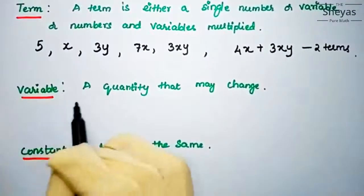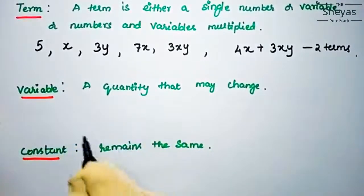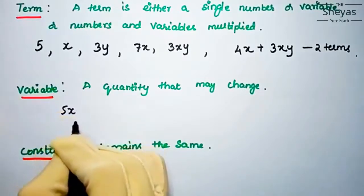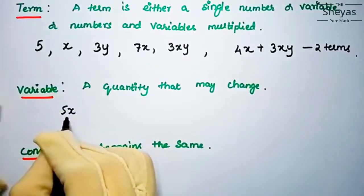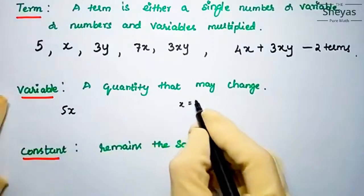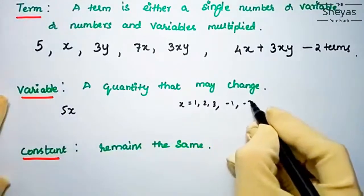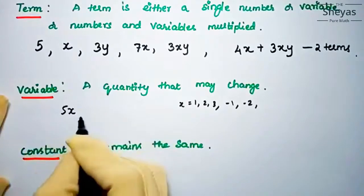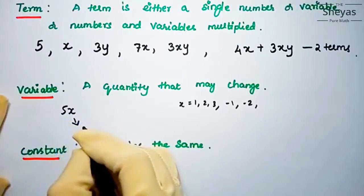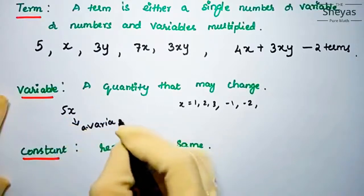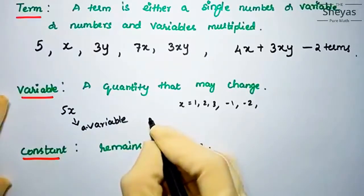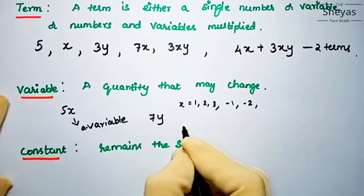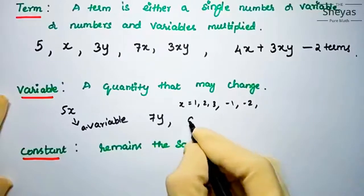The next concept is variable — a quantity that may change. For example, in 5x, the 5 is a constant value that doesn't change, but x can take any values: 1, 2, 3, or negative 1, negative 2. Since the value of x changes, we call it a variable. Another example: 7y. We denote variables with alphabets — y, a, and so on.